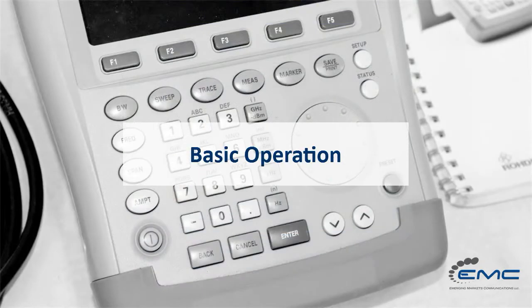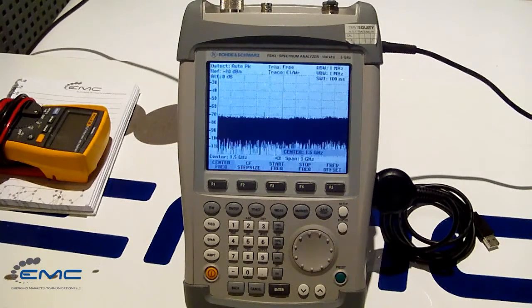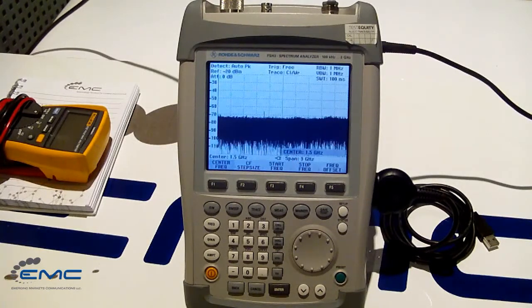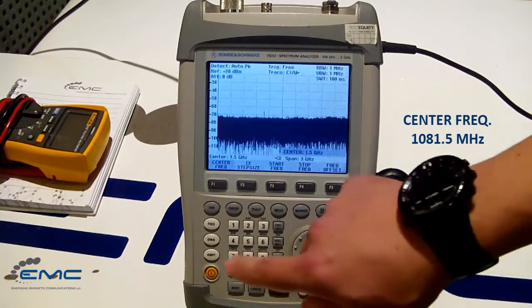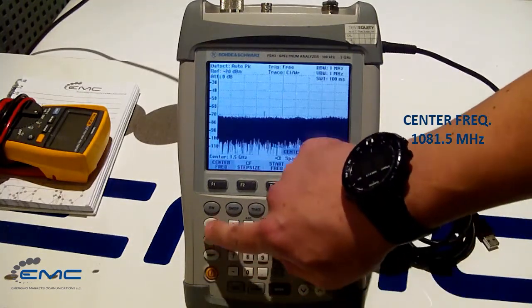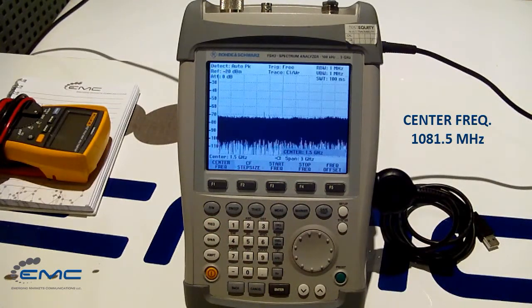Basic operation. For example, we want to see the carrier with central frequency 1081.5 MHz. To do that, please press the FREQ button and select central frequency by using soft keys.